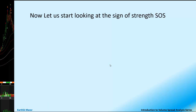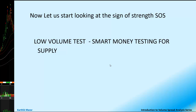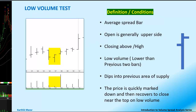Now let's look in detail at the Sign of Strength: the Low Volume Test, or Test for Supply. It is where the smart money is testing whether supply is present. It will be an average spread bar, gently opening on the higher side and closing on the upper side or near the high. The volume will be low — for calculation purposes, normally lower than the previous two bars. Of course, you will find variations where one must use judgment to determine if it is really a test.